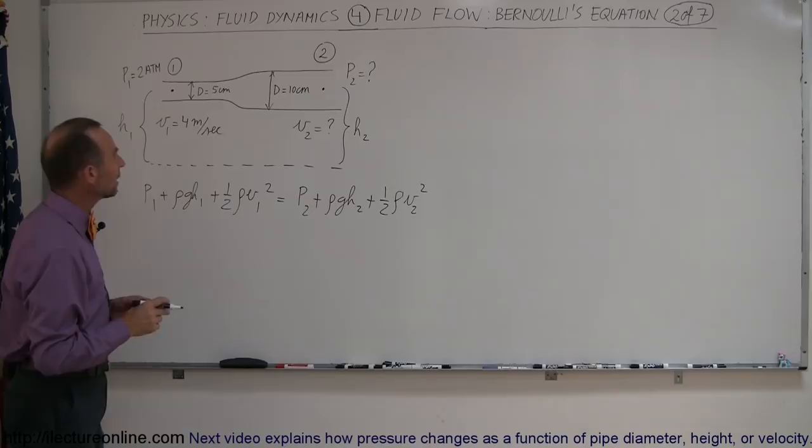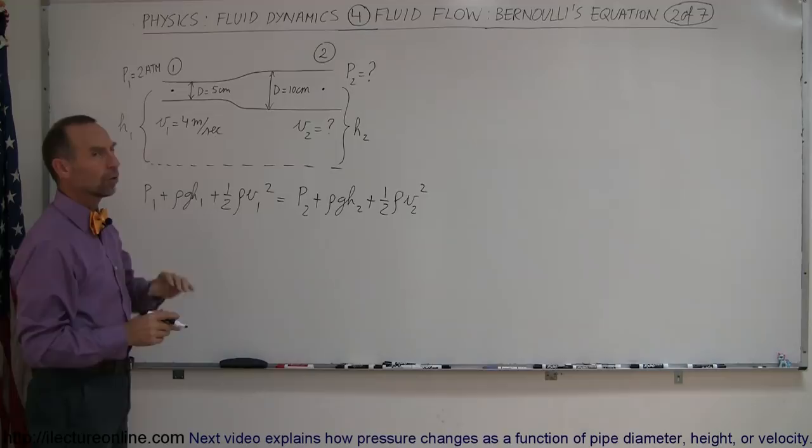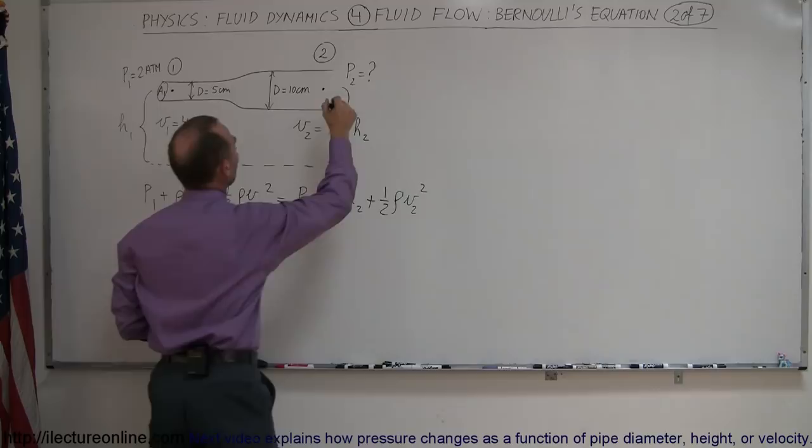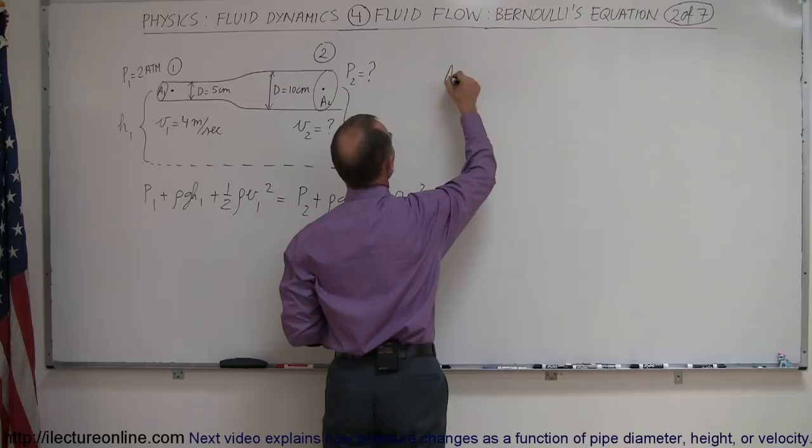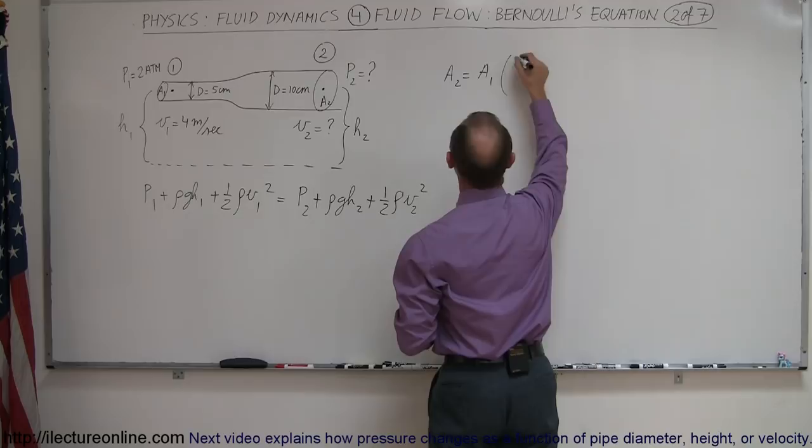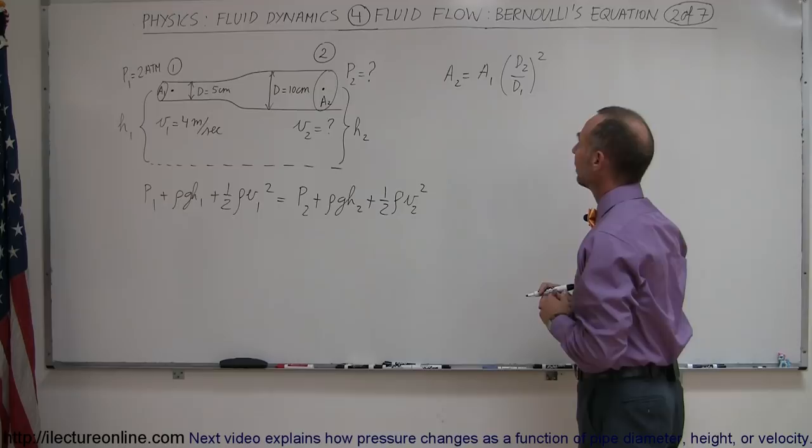The first thing we need to do is figure out what the velocity is at point 2. If the diameter doubled, what does that do to the cross-sectional area? If we say that this is A1, the cross-sectional area 1, and over here this is cross-sectional area A2, we can see that A2 is equal to A1 times the ratio of D2 over D1 squared.